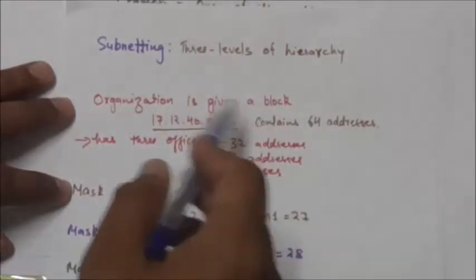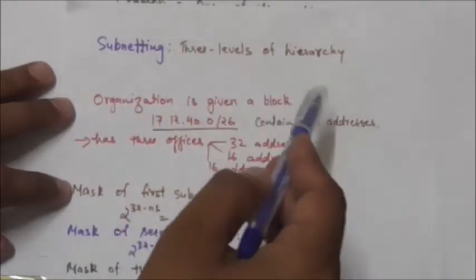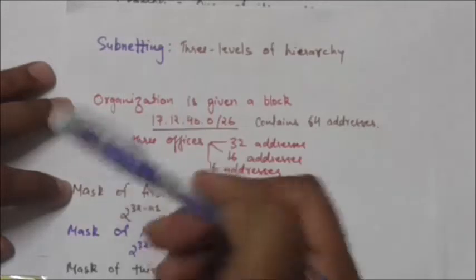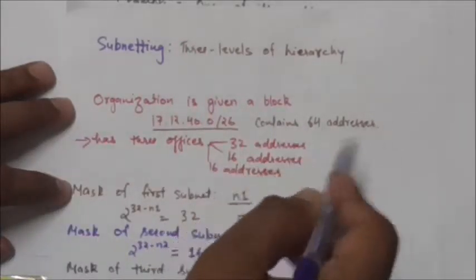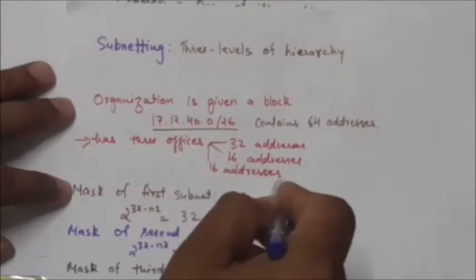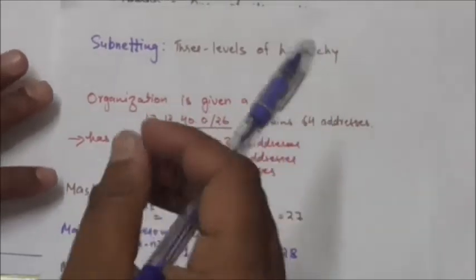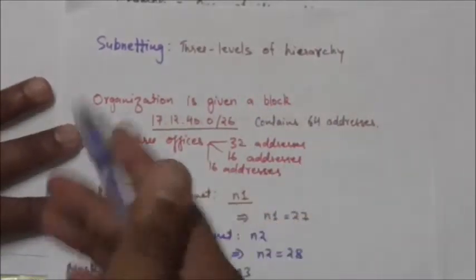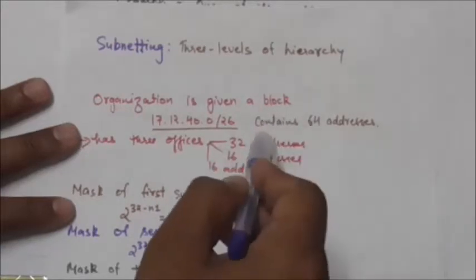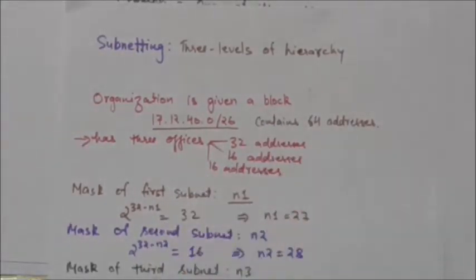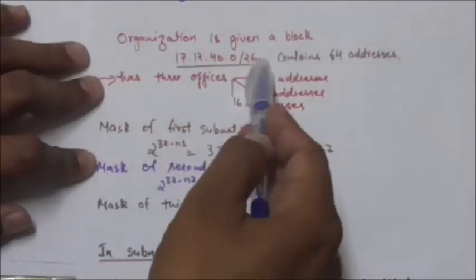This organization needs to divide the 64 addresses into three sub-blocks: 32 addresses, 16 addresses, and 16 addresses — one for each of its three offices. The mask of this organization is /26, and now we will find the masks of the subnets.